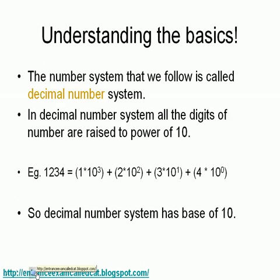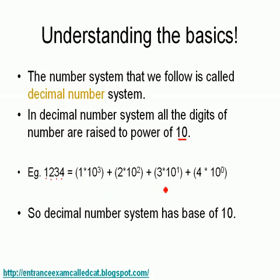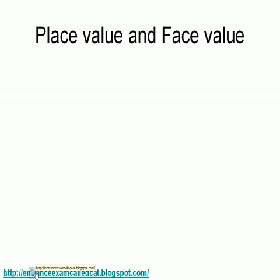Understanding the basics: the number system that we follow is called the decimal number system. In the decimal number system, all the digits of the number are raised to a power of 10. For example, 1234 is in fact 1×10³ + 2×10² + 3×10¹ + 4×10⁰. This gives 1000 + 200 + 30 + 4, which sums to 1234. The base of the decimal number system is 10.